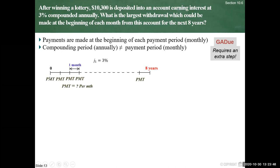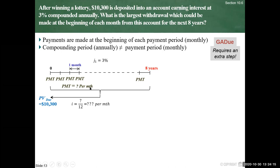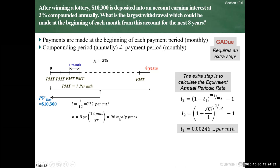Our timeline shows payments at the beginning, with an unknown monthly payment. The nominal rate J1 is 3% and the term is 8 years. We bring all these payments back to today because they're all equal to $10,300, which is what we deposited today. Because we have monthly payments, we need an equivalent monthly periodic rate. The number of monthly payments is 8 years times 12 = 96 payments. The equivalent monthly rate is (1 + 0.03/1) raised to the 1/12th power minus 1, giving 0.002466... per month.